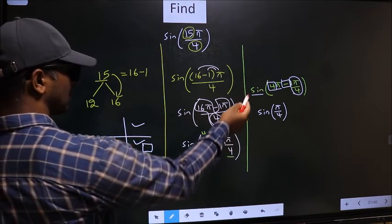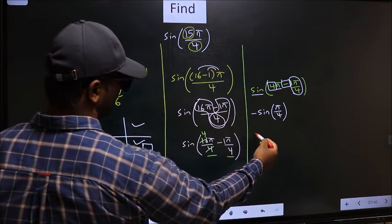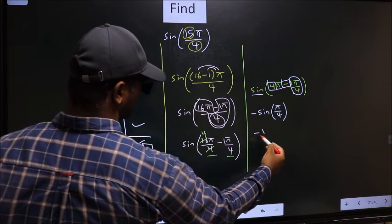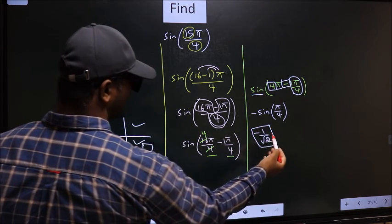That means the angle lies in the fourth quadrant. And in the fourth quadrant, sine is negative. So put negative. So negative sine π by 4 is 1 by root 2. So this is our answer.